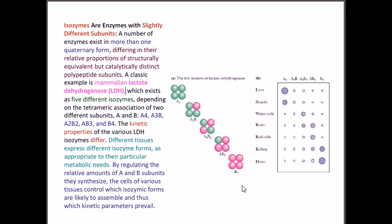In heart and in liver, lactate dehydrogenase needs a different subunit arrangement because the heart requires different enzymatic activity than the brain. Different tissues express different isozyme forms because it favors that cell's lining to work properly.